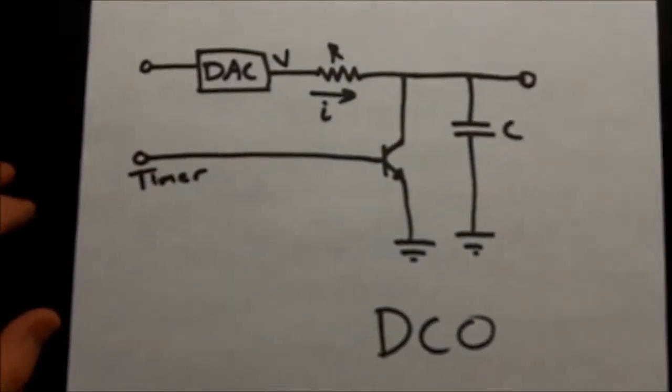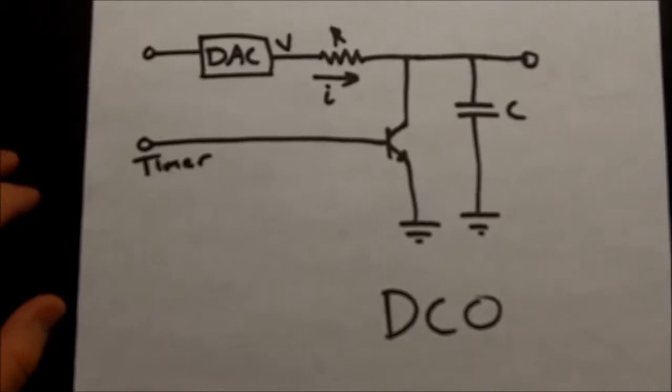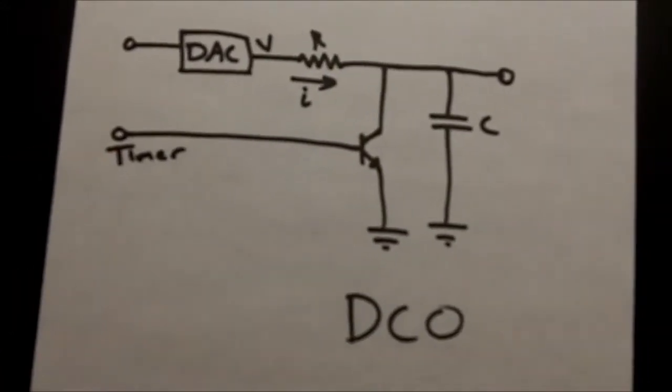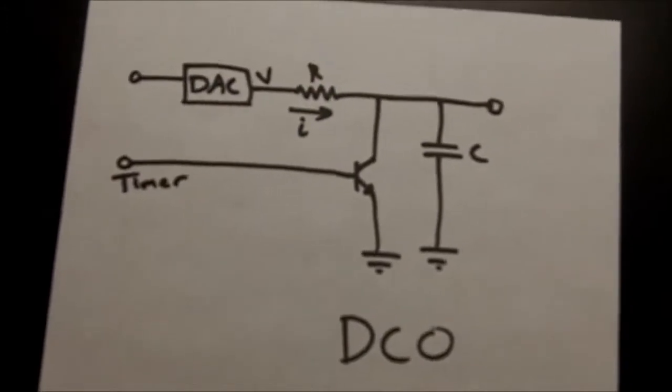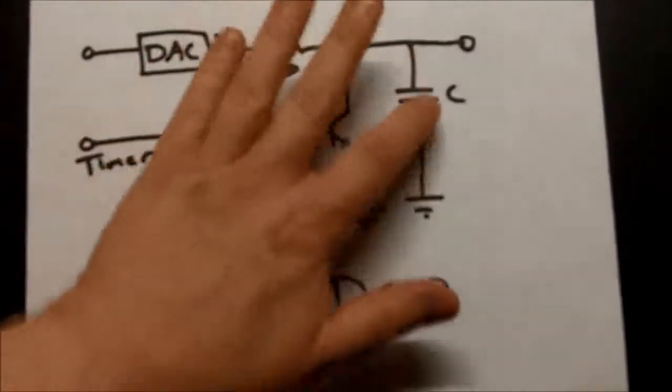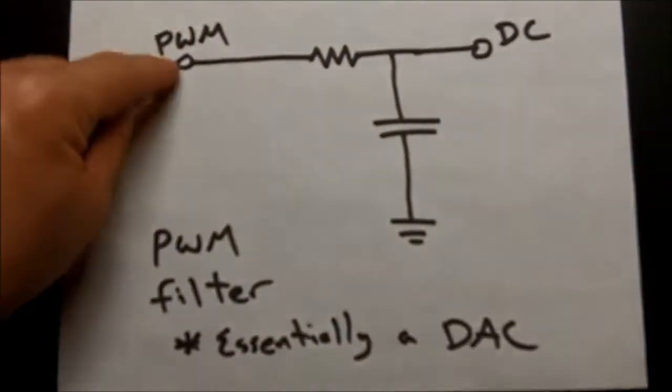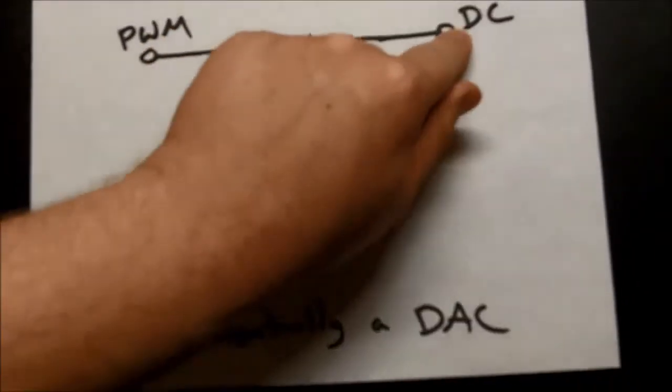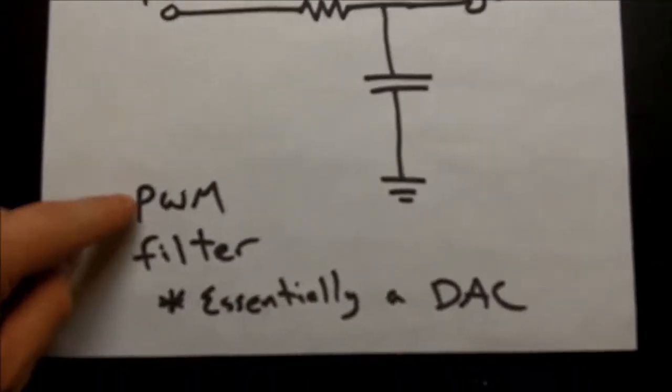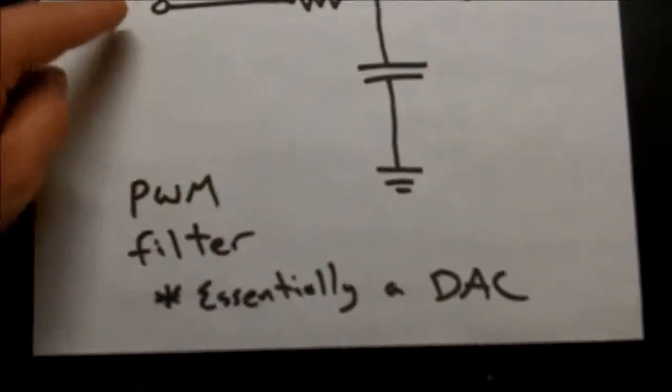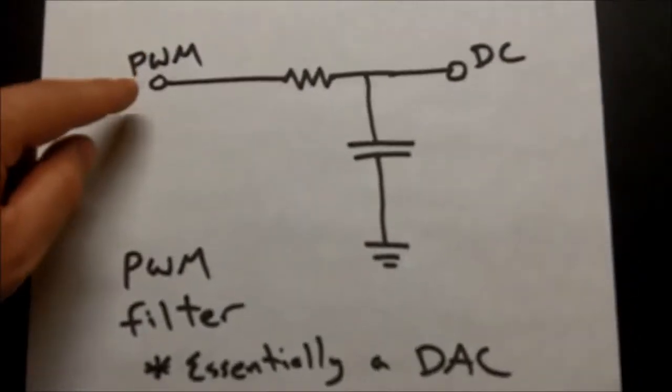Makes for a nice sawtooth wave with digital control via a timer. Well I got to thinking that this part right here looks an awful lot like this simple thing, which is really just an RC network for converting a PWM output to a DC output, a PWM filter as I'm calling it here, which is essentially a digital to analog converter in its own right.